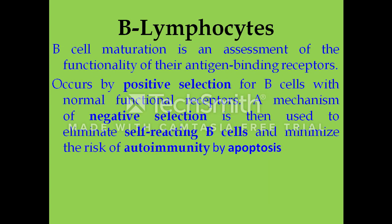B cell maturation is an assessment of the functionality of their antigen binding receptors. It involves the binding of the antigen to the antigen binding receptor. This occurs through positive selection of B cells with normal functional receptors — the B cell with specificity or complementarity towards the antigen is selected, while cells lacking that complementarity are not selected.